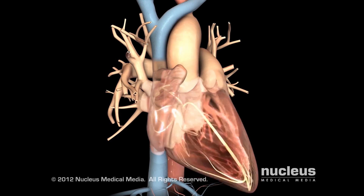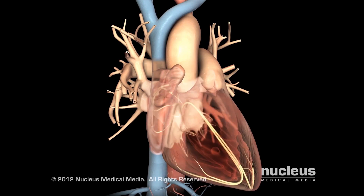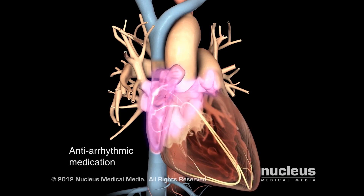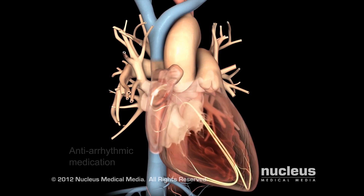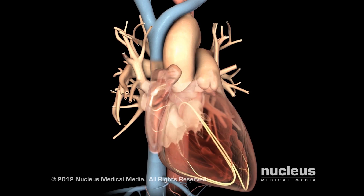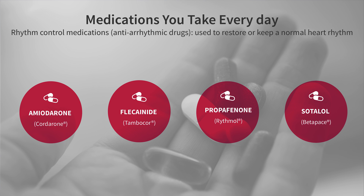Rhythm control medications, often referred to as antiarrhythmic drugs, help to restore and maintain a more regular heart rhythm. The most common ones used are amiodarone, flecainide, propafenone, and sotalol.